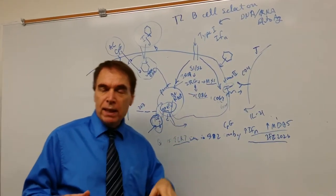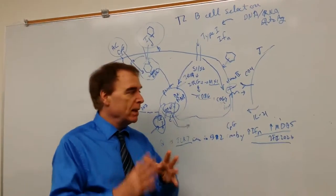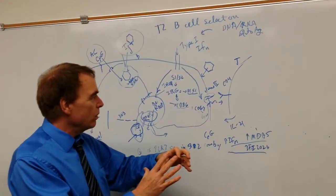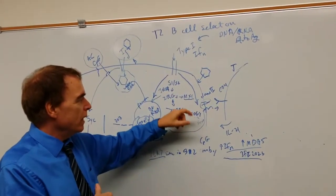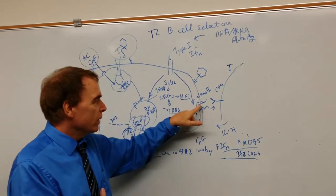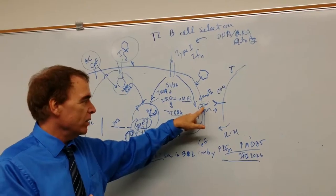In MCPs, marginal zone precursors, which might be a transitional stage, we already showed that type 1 interferon upregulates CD86, which is a costimulatory molecule for class 2 processed antigens.